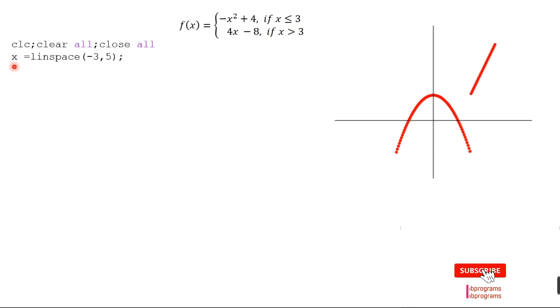First, we create an input vector using the linspace command that will produce 100 points between minus 3 and 5. This interval depends on us; we can take any interval by taking care of these limits.